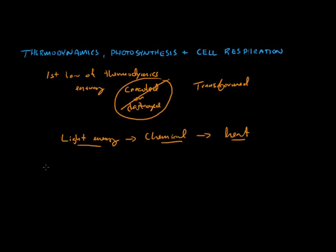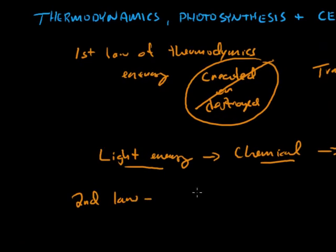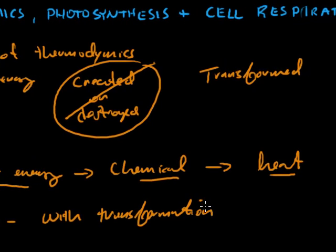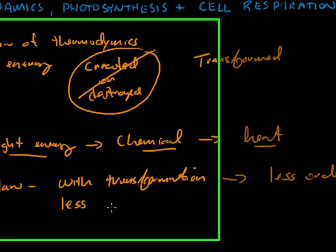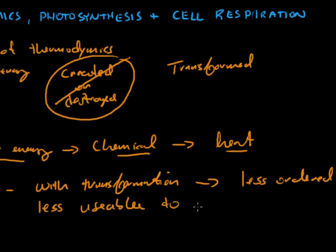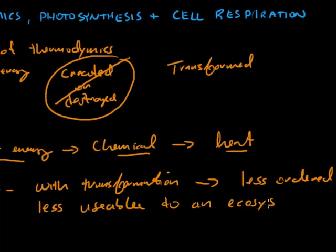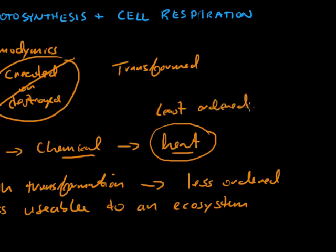And then that gets us to our second law, which states that with each transformation you don't lose energy, but it becomes less ordered. And therefore it is less usable to an ecosystem or the living things in the ecosystem. And heat is the least ordered or most chaotic form of that energy.